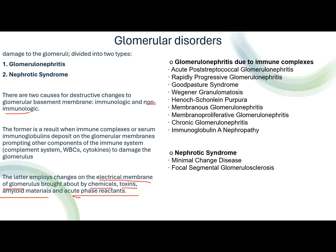The different glomerulonephritis due to immune complexes include: acute post-streptococcal glomerulonephritis, rapidly progressive glomerulonephritis, Goodpasture syndrome, Wegener granulomatosis, Henoch-Schönlein purpura, membranous glomerulonephritis, membranoproliferative glomerulonephritis, chronic glomerulonephritis, and IgA or immunoglobulin A nephropathy. The second type of glomerular disorder is nephrotic syndrome, which includes minimal change disease and focal segmental glomerulosclerosis.